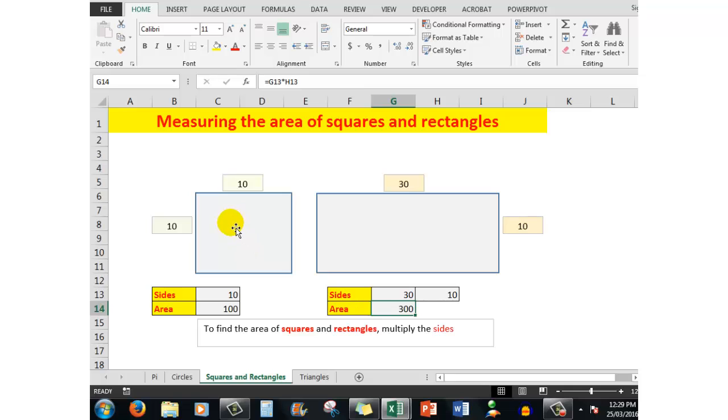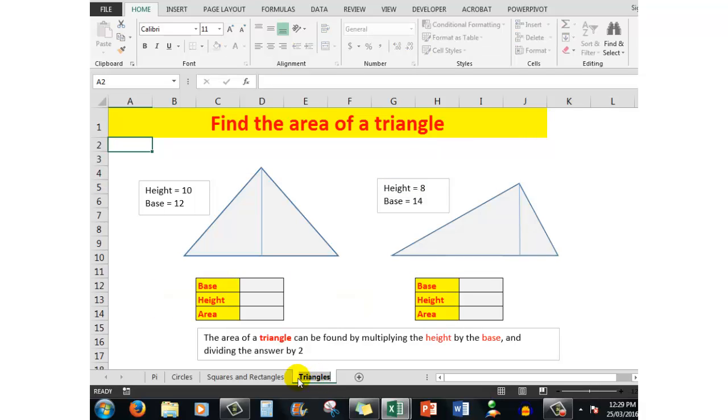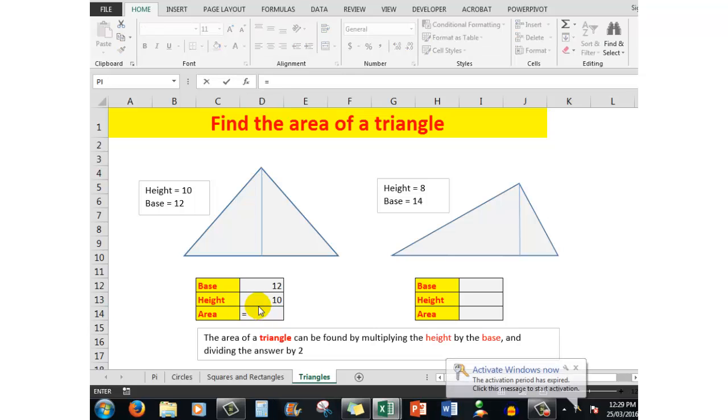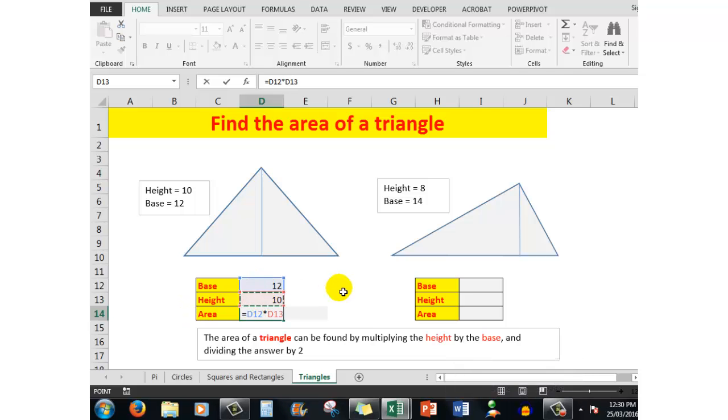The area of a triangle can be found by multiplying the height by the base and then dividing your answer by 2. In this triangle, the base is 12, the height is 10, and the formula will be equal to d12 multiplied by d13 divided by 2. So the area of that particular triangle is 60.